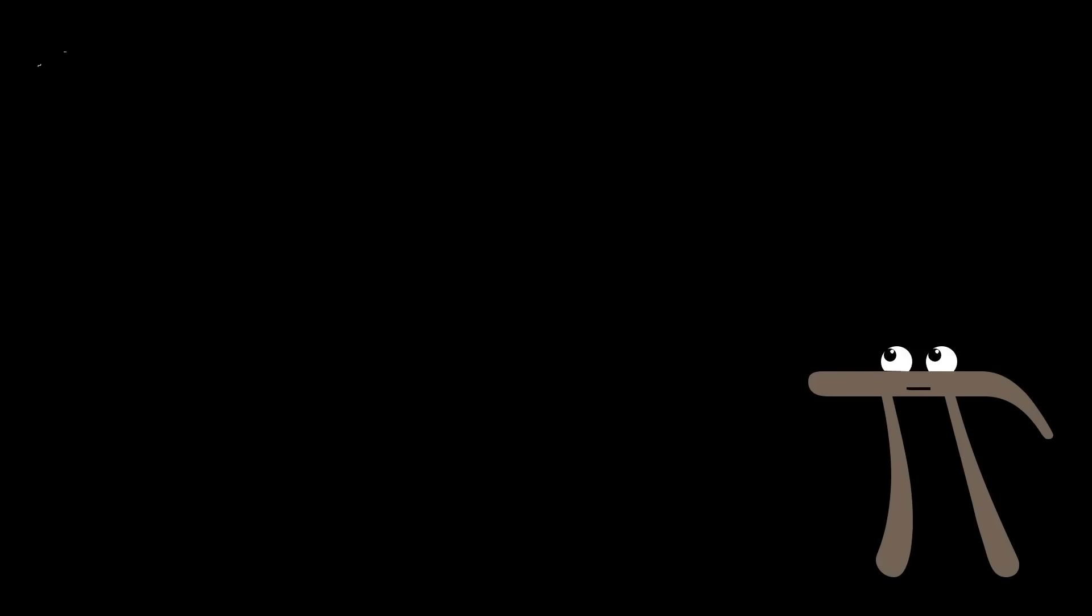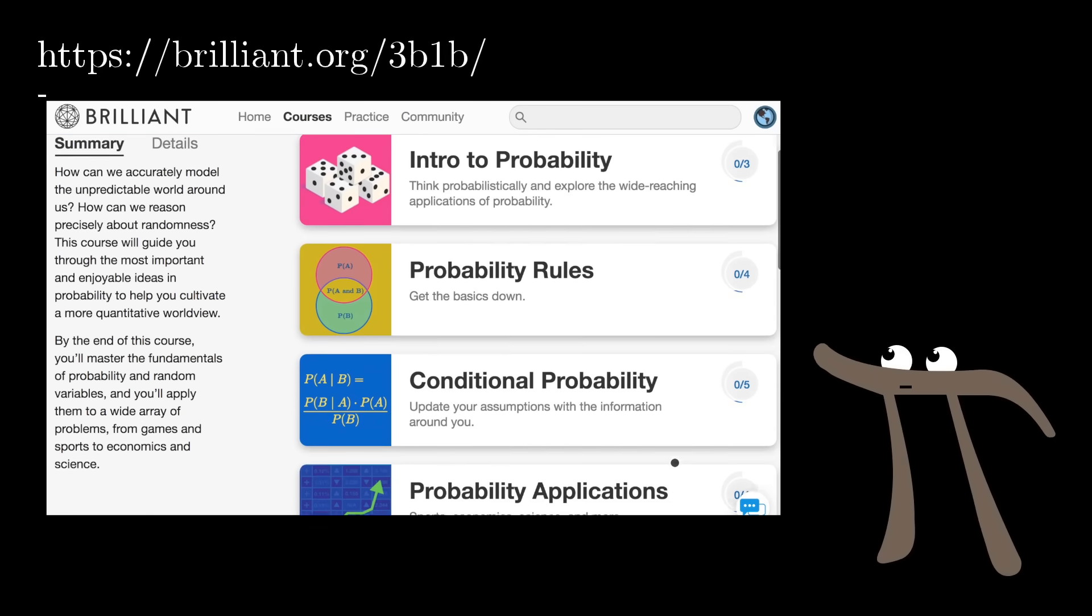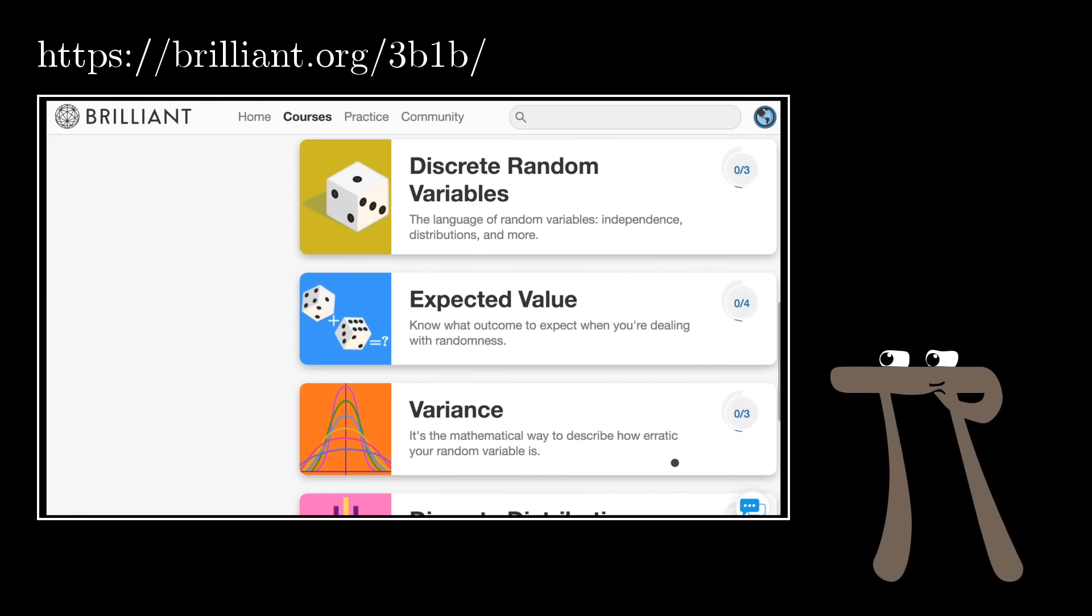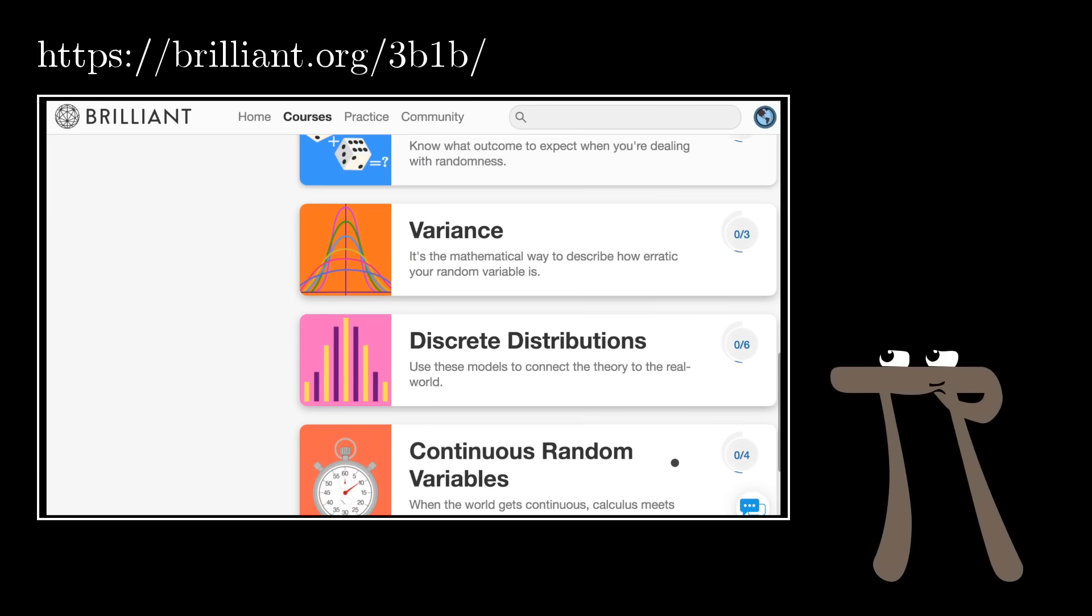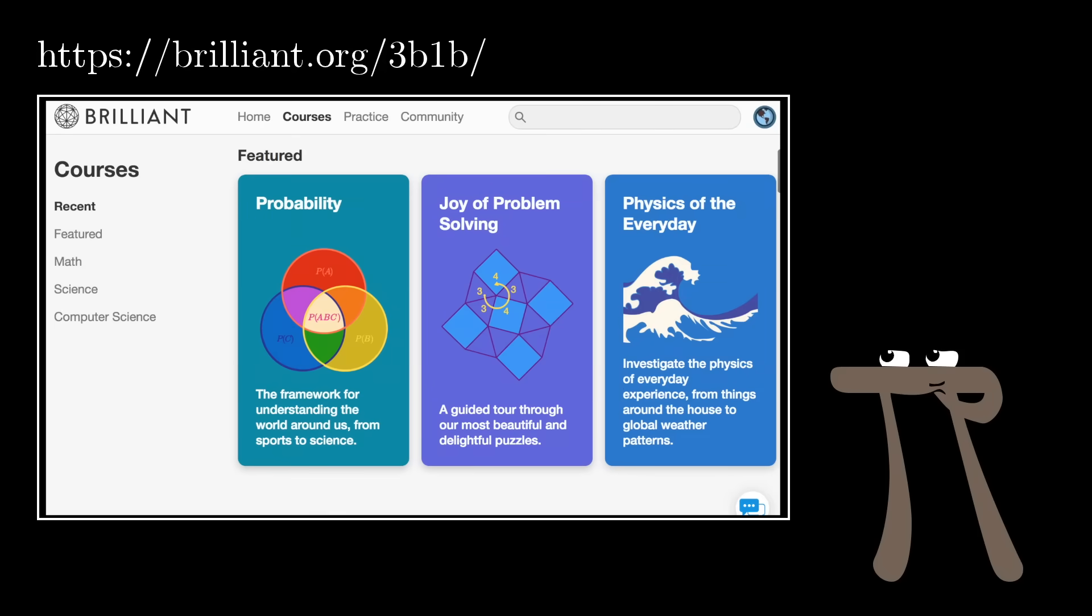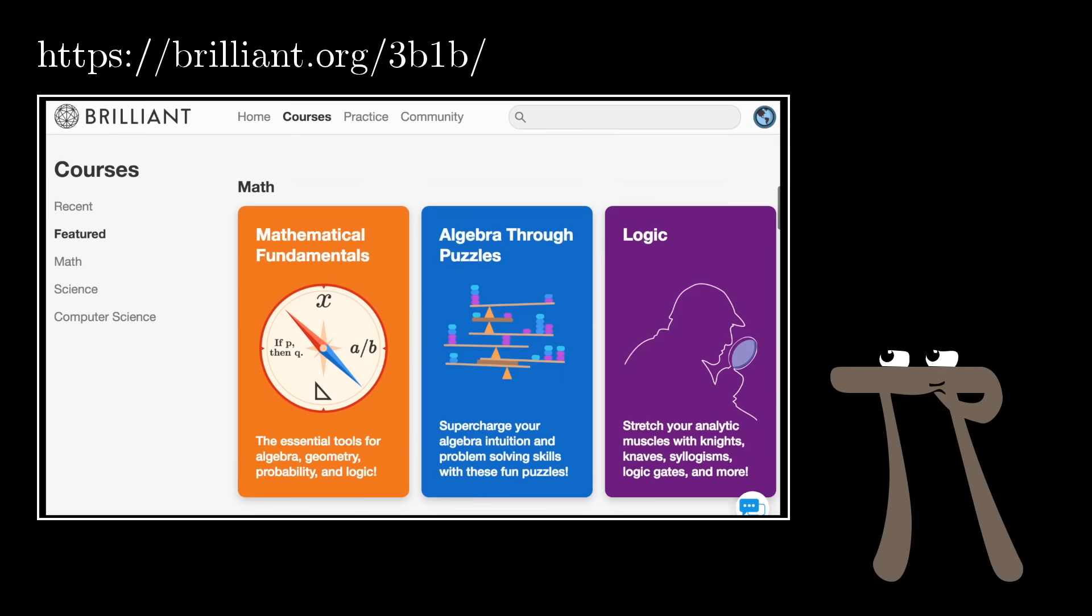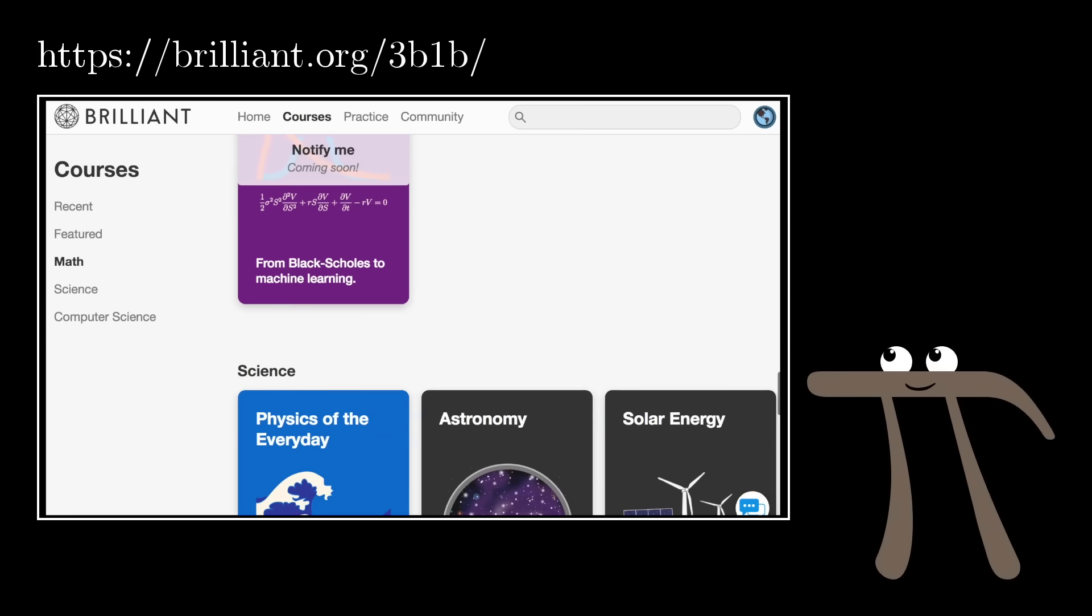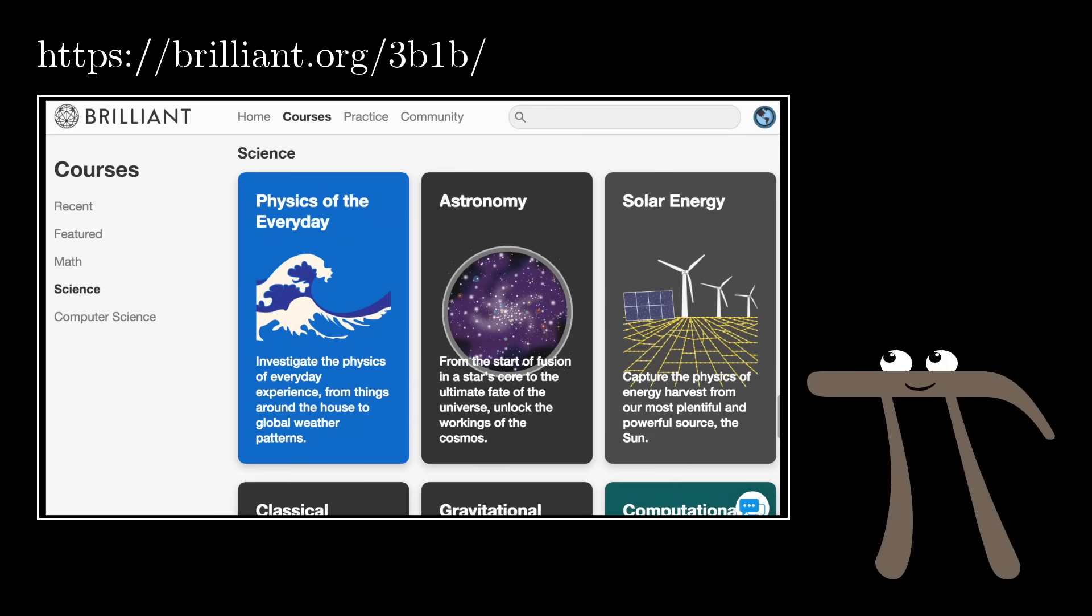Brilliant.org is a site where you can practice your problem-solving abilities with questions like this and many, many more, and that really is the best way to learn. You're going to find countless interesting questions curated in a pretty thoughtful way so that you really do come away better at problem solving. If you want more probability, they have a really good course on probability, but they've got all sorts of other math and science as well, so you're almost certainly going to find something that interests you.